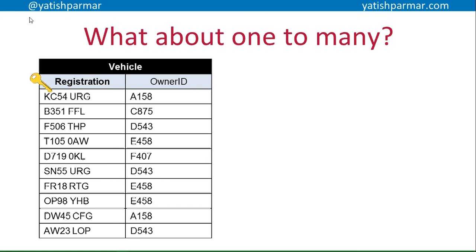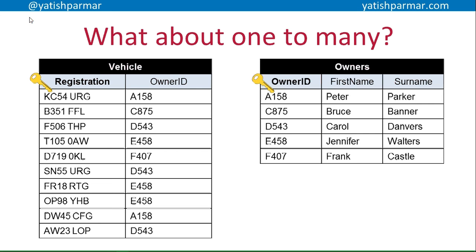For a one-to-many relationship, consider the vehicles example. The primary key is the vehicle registration, and the owner ID is a foreign key. In the owner table, Peter Parker with ID A158 owns the top vehicle and the penultimate one in the table — so one owner can have many vehicles. The owner ID is the primary key in the owner table, and the foreign key is in the vehicle table. The primary key is on the one side because that's the unique side, and the foreign key is on the many side.